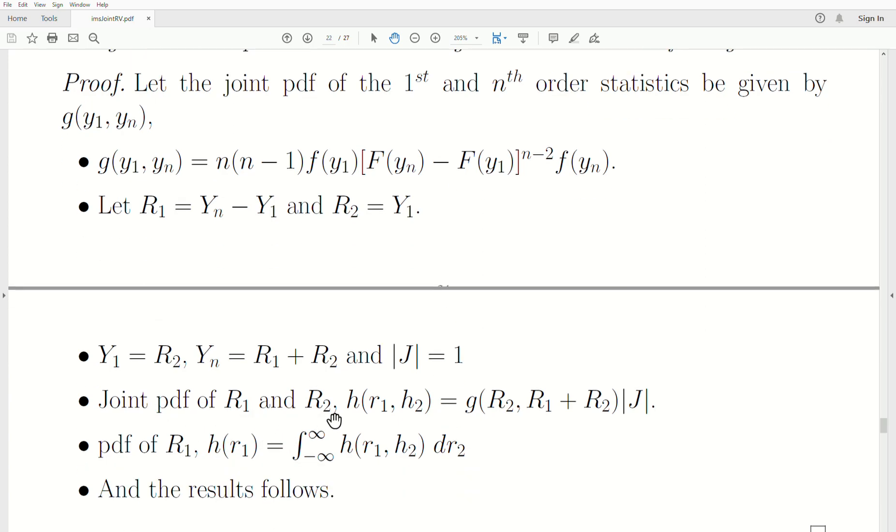Now the joint PDF of r1 and r2, we're going to call h(r1, r2), and that's this. We plug in r2 and r1 plus r2 back into the PDF for the first and nth order statistics. This Jacobian is 1 so it doesn't play a part. But now to find the PDF of r1, which is the sample range, we have to integrate out r2, and that's what we do.